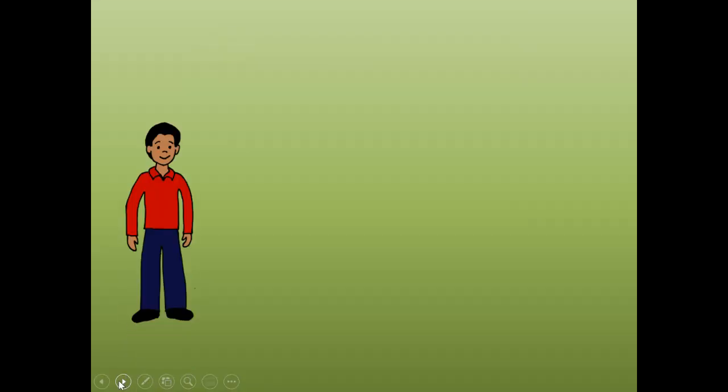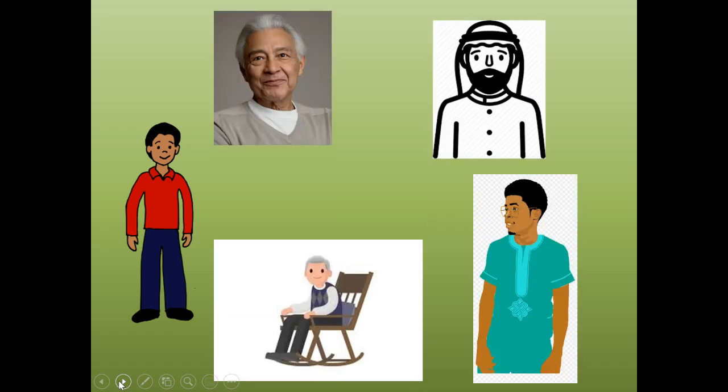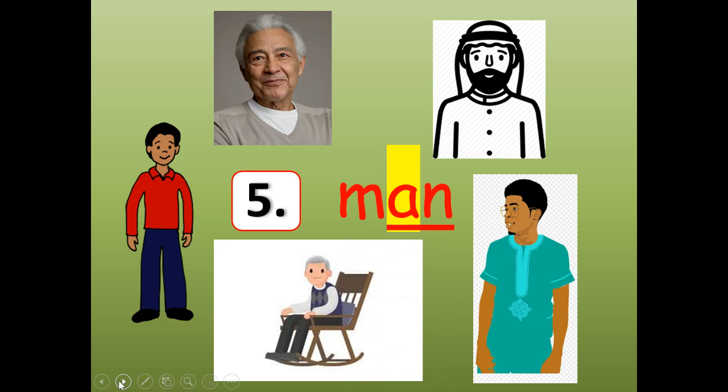Number five. These are all examples of what or who. Number five. Man. Stretch it. Man. Shrink it. Man. I'm pulling my imaginary rubber band or my imaginary slinky to stretch that out. Man. Shrink it. Man. M-A-N.